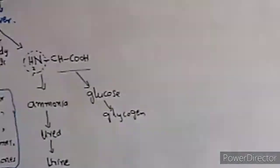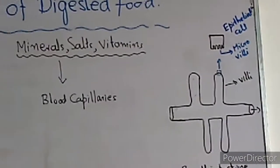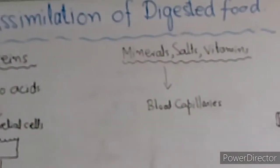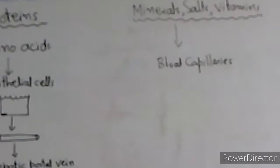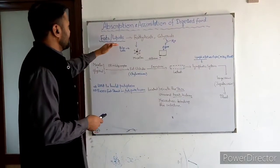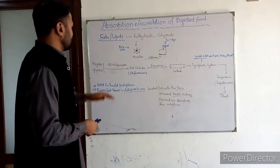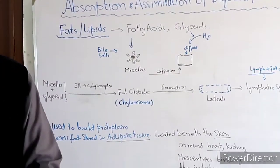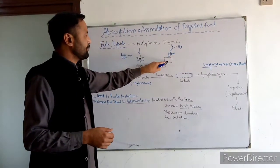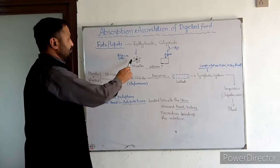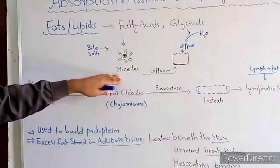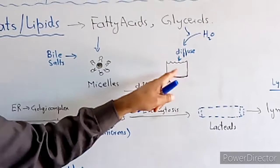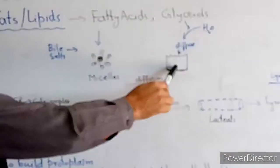Simple minerals and vitamins pass directly into the blood. Fat is digested into fatty acids and glycerol. The fatty acids and glycerol, which are water-soluble, enter the epithelial cells through simple diffusion, along with bile micelles.